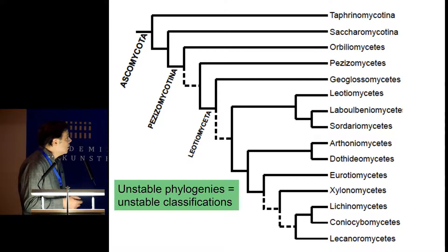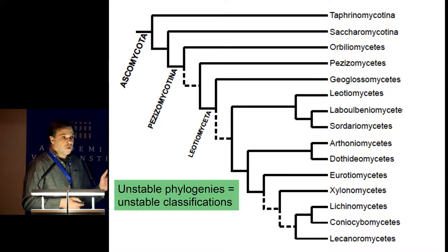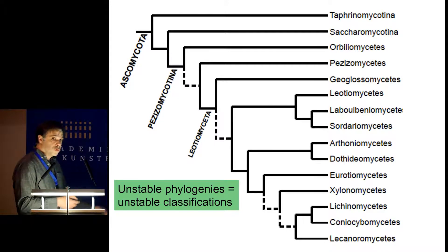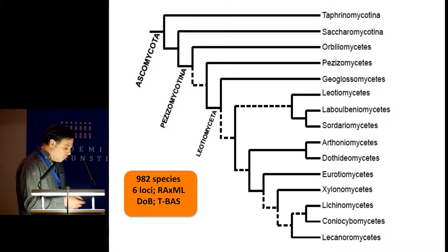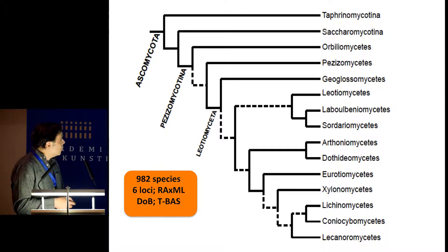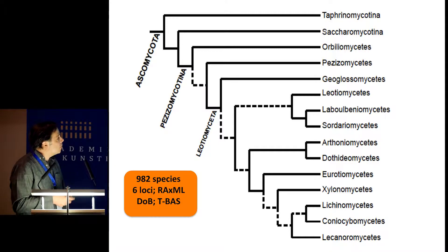Another important thing to realize is that unstable phylogenies equal unstable classifications. We summarized the relationships where dashed lines represent internodes that have never received high support values from any study. For the Dimensions of Biodiversity project, we estimated relationships for 982 reference taxa using six loci. The topology is exactly the same, but we are losing some support.